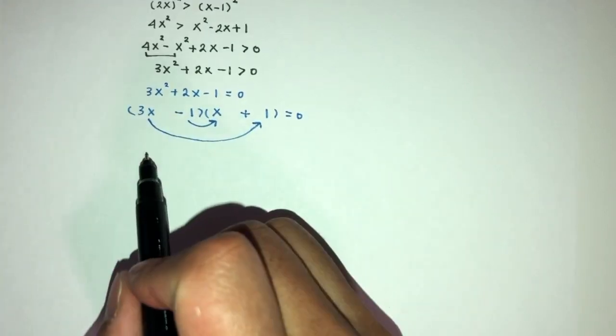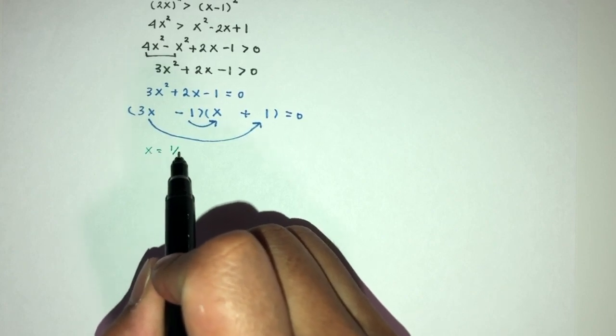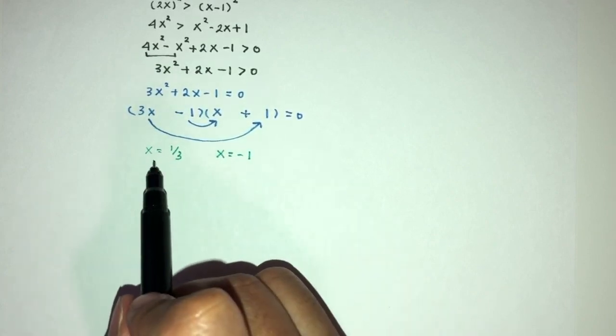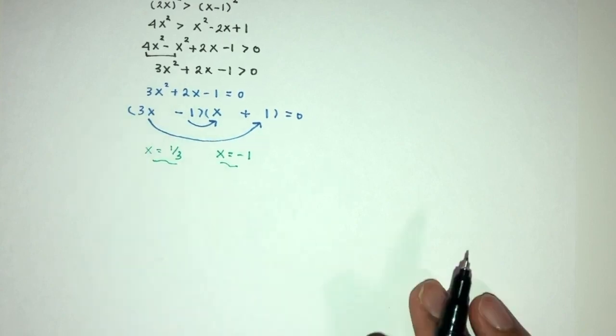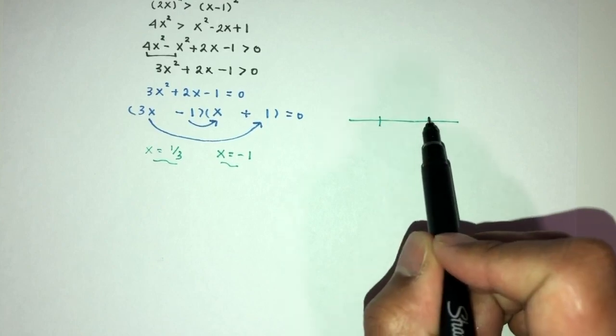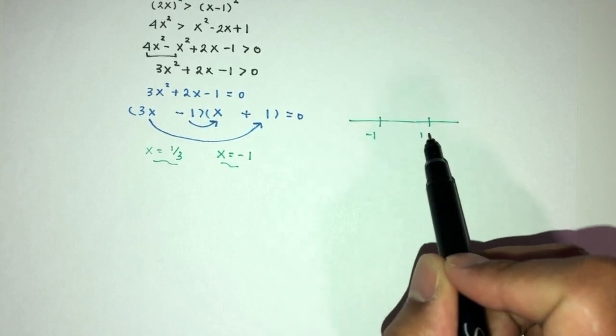Finally, x will be the value of 1 over 3 and x will be the value of minus 1. This is the critical values of this question. Now, let's use our number line to find the answers. Here, we have minus 1. Here, we have 1 over 3.